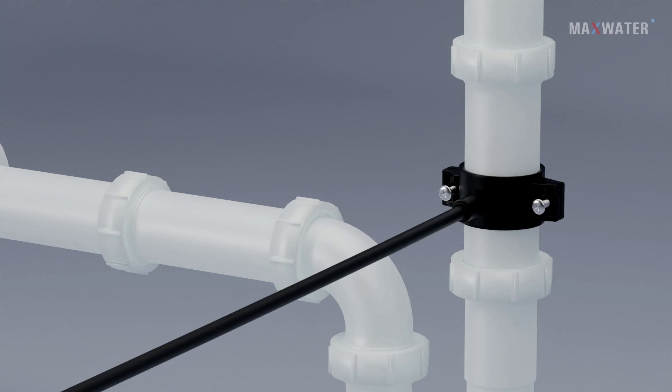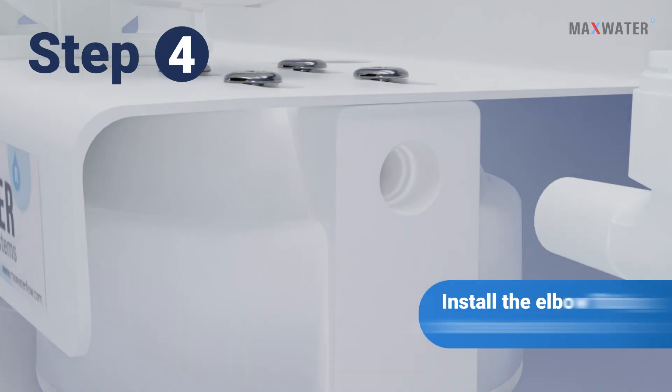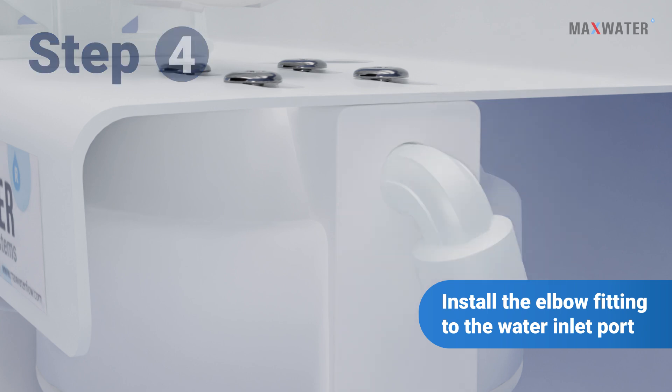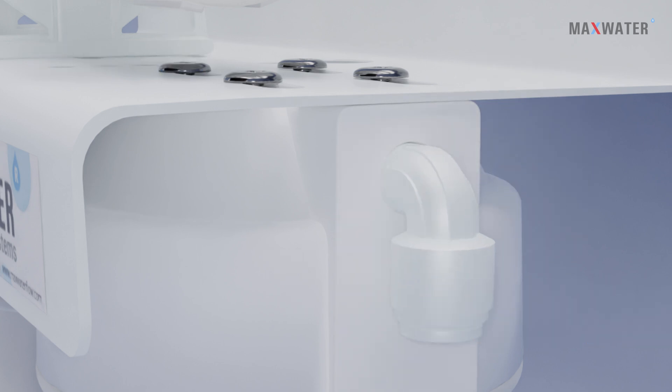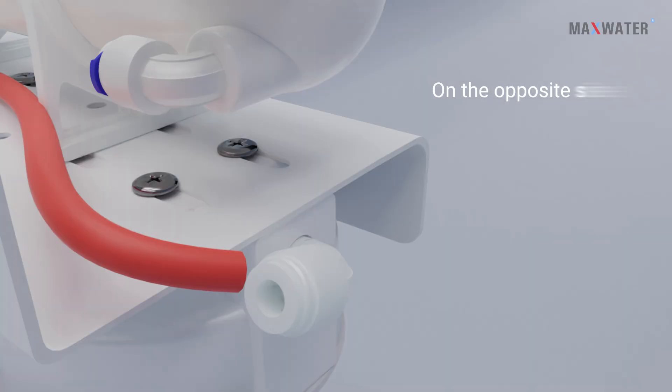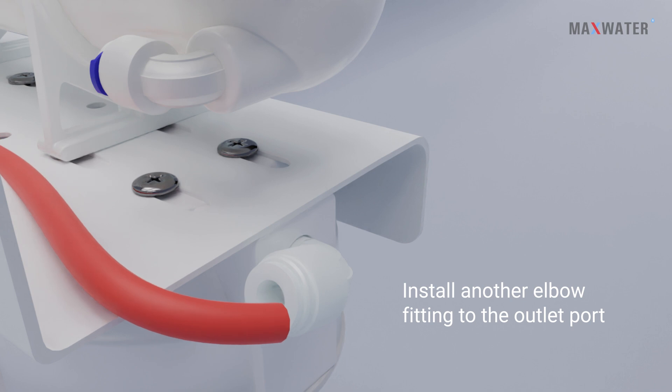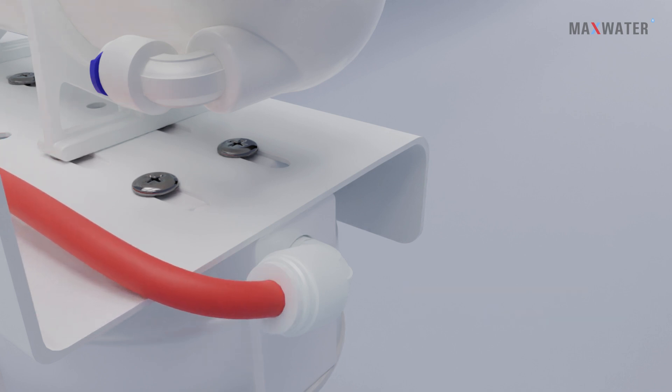Step four: install the elbow fitting to the system water inlet port, then connect the red tubing from the feed water adapter through the elbow fitting. Now on the opposite side of the system, install another elbow fitting to the outlet port, but connect the red tubing from the auto shut-off valve's inlet to the elbow fitting. Do not over tighten any of those fittings.